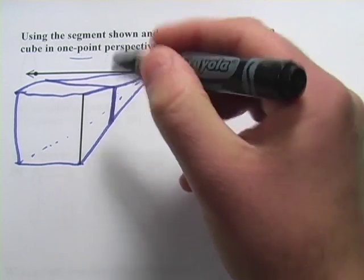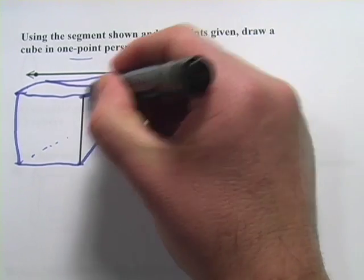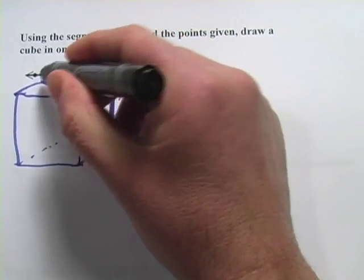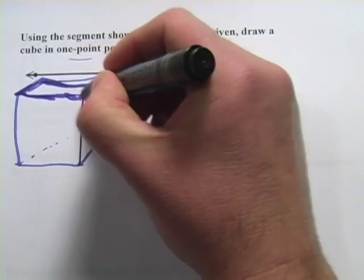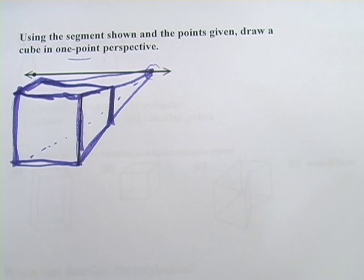Not the greatest. And then these other lines are just really my guidelines. So I'm going to just darken in the actual cube part. And that is my attempt at drawing a cube in one-point perspective.